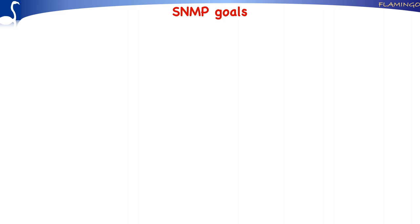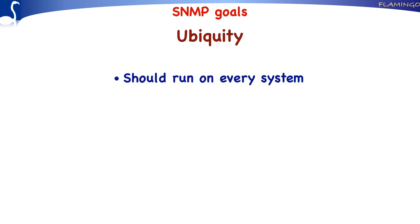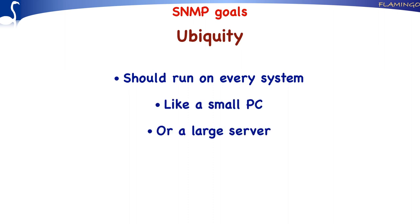We will now discuss the goals the SNMP designers had in mind. These goals were already written down in the very first version of the SNMP standard, although at that time in slightly different words. The first goal is Ubiquity, which basically means that it should be possible to run SNMP on every system — in the early 1990s, on small PCs but also on large servers. Nowadays, SNMP is able to run on very small devices such as microcontrollers and embedded systems.